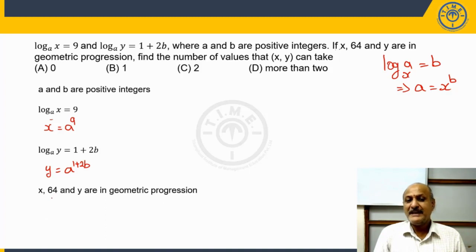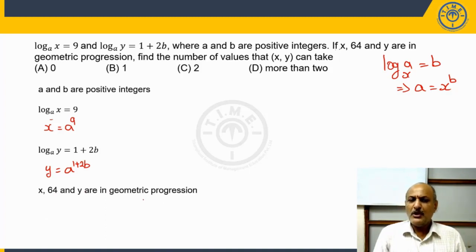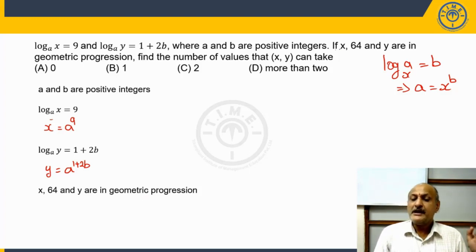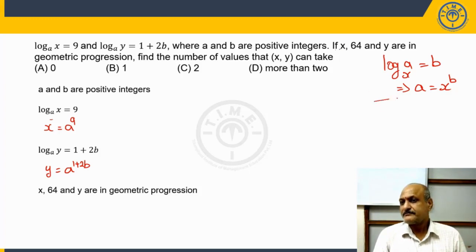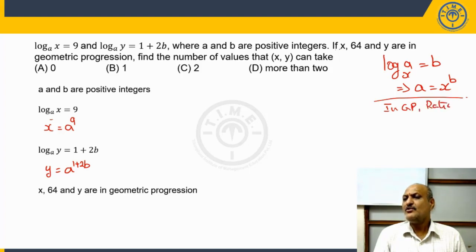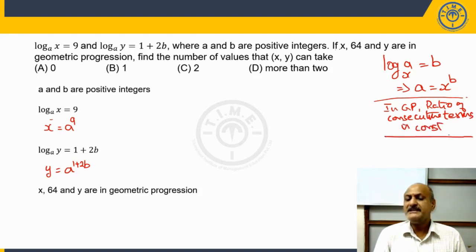Now we also have that x, 64, and y are in a geometric progression. What do we know? We say terms are in a geometric progression when the ratio of consecutive terms is a constant. That is what we have to apply to this statement.